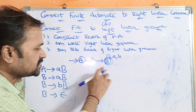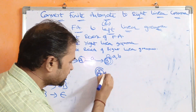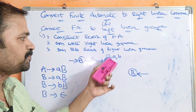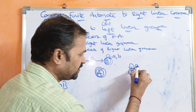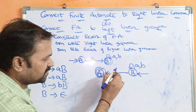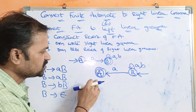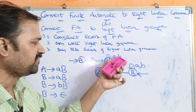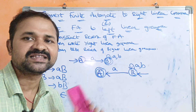Now reversing the finite automata: the initial state a becomes the final state, and the final state b becomes the initial state — so b now has the arrow indicating it is the initial state. The self-loop on b for inputs a and b remains unchanged. The edge from a to b on 'a' is reversed, so now we have an edge from b to a on 'a'. Construction of the reversed finite automata is complete.